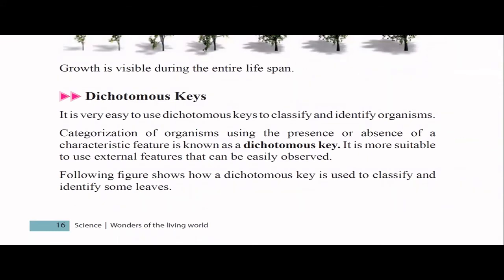Next comes the dichotomous key. This is one of the ways to classify and identify organisms. Remember, this is not the most accurate way, but it is one of the easiest. What you do is take a characteristic and see whether it is absent or present. Based on that, you differentiate categories. It is always better to use external features that can be easily seen.